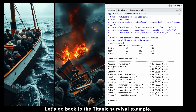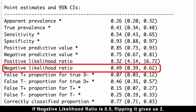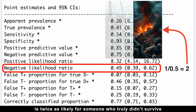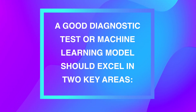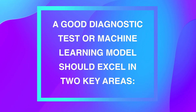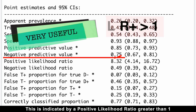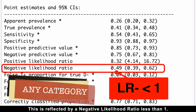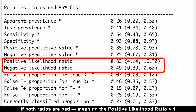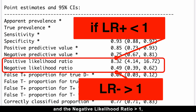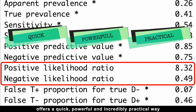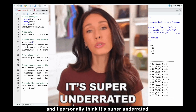Going back to the Titanic survival example: if the negative likelihood ratio is 0.5, flipping it gives us 2, meaning predicting someone didn't survive is twice as likely for someone who truly didn't survive than for someone who did. In summary, a good diagnostic test or machine learning model should excel in two key areas: confirming positives, indicated by a positive likelihood ratio greater than 1, and ruling out negatives, reflected by a negative likelihood ratio less than 1. If both ratios are bad, the test or model is essentially useless. This likelihood ratio component of confusion metric results offers a quick, powerful, and incredibly practical way to assess model quality — and it's super underrated.